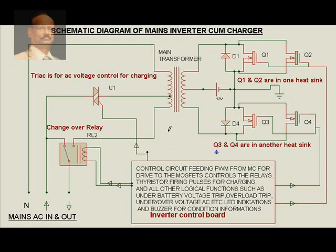Usually when the main supply is available, it is given directly to the output. It enters at the input and comes back at the output through a relay contact switch which is driven on when mains is available. This is the NO contact — it closes and input passes through to the output. Simultaneously, this AC is also taken and passes through a triac to the mains transformer, which is used as a step-down transformer, connected to a tapping at a particular voltage.